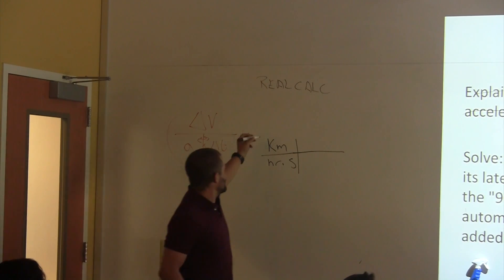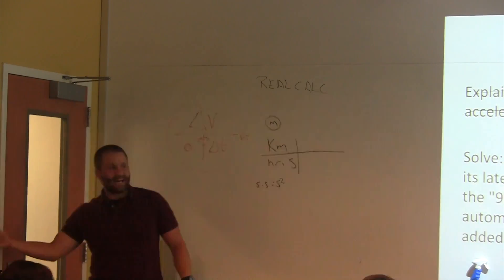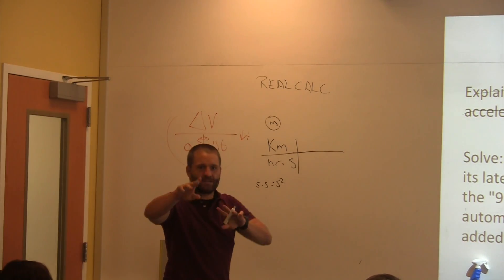All right. Now, I want to change that to meters on top, second squared on bottom, which is the same thing as S times S. Right? Turn on this light for lighting. All right. It's for the lighting purposes on the camera.